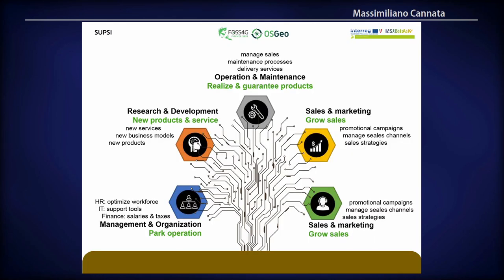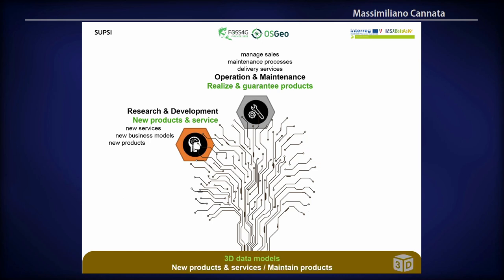As a paradigm for digital value creation, we can act on each of the five areas of business: we can create value in the operational and maintenance area, in the sales and marketing area for example by growing sales or running promotional campaigns, in the management and organization of the park, and in research and development of new products. Thinking about these five areas, we decided to propose three solutions impacting different areas.